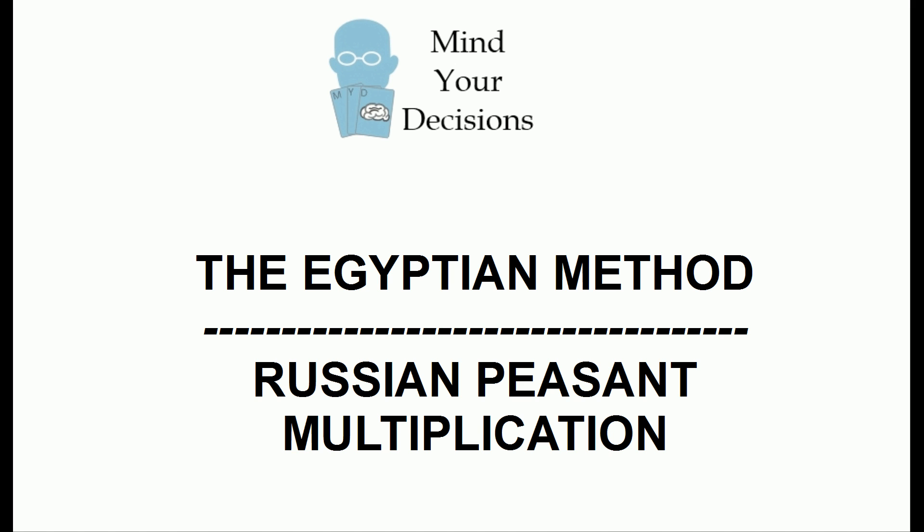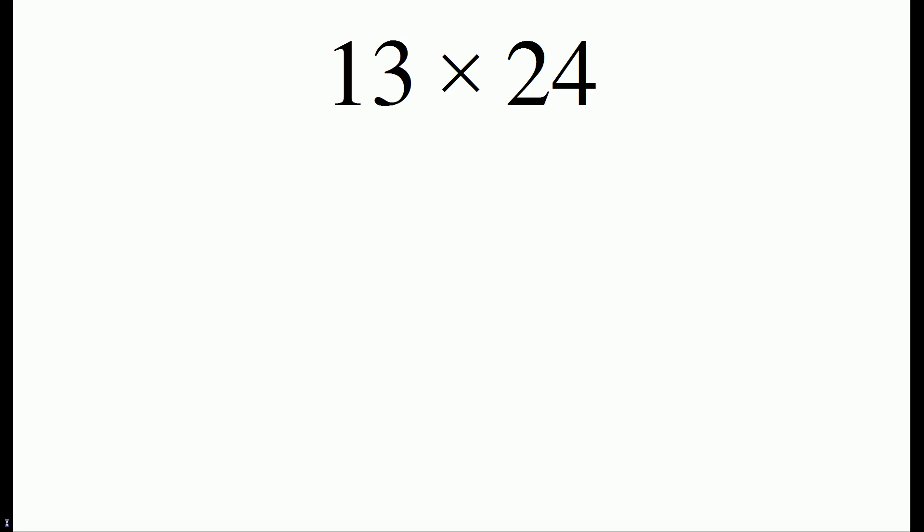The interesting aspect is that you will be able to multiply any two whole numbers as long as you know how to divide numbers in half and double numbers. So let's do an example of 13 times 24.